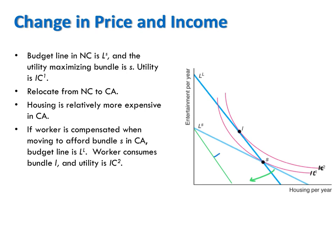Increasing her income will now shift her budget line out, moving it to budget line LL. Notice that her new budget line is steeper than her old budget line, reflecting the higher price of housing in California. And the new budget line is exactly going through bundle S, the bundle she chose before the move — because her employer specifically gave her enough additional income to make what she chose in North Carolina still attainable in California.